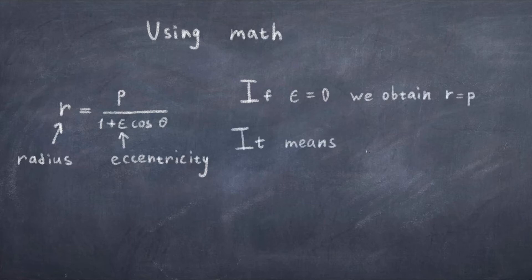So if epsilon is 0, it's just a special case where the ellipse is just like a circle. And one can then see that the formula reduces to r equals p, thus a circle with radius p.